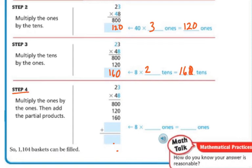Step 4 is multiply the ones by the ones. So I have 8 times 3, which is 24. So I have 8 ones times 3 ones, which is 24 ones. And now I'm going to add them together. So 4 plus 0 plus 0 plus 0 is 4. 6 plus 2 is 8, plus another 2 is 10. I'm going to regroup my ones. 8, 9, 10, 11. So I have 1,104 baskets can be filled.